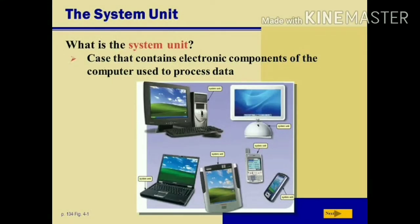Computer hardware is divided into two main categories: system unit and peripheral devices. Firstly we will discuss about the system unit. System unit contains the electronic components used to process and temporarily store data and instructions. Jo system unit hota hai, woh ek electronic component hota hai jo data ki processing ke liye aur usko store karne ke liye use mein aata hai.